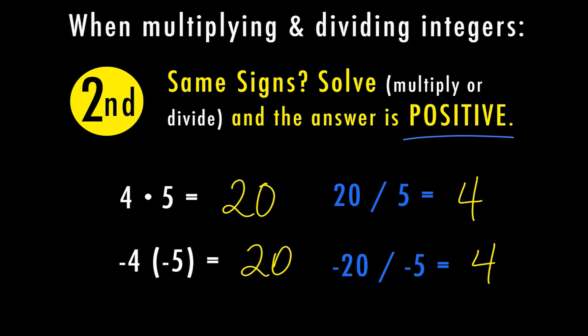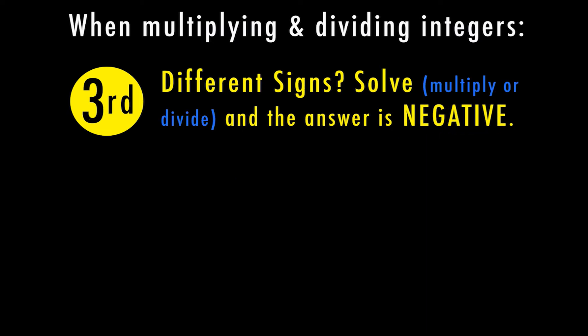So in any situation when you're multiplying or dividing, you just want to find out if they're the same sign or different signs. If they're the same sign, your answer is positive. If they have different signs, we're still going to solve by multiplying or dividing, and then the answer is going to be negative.